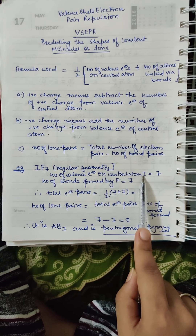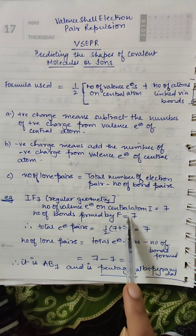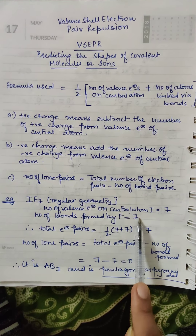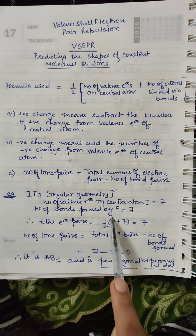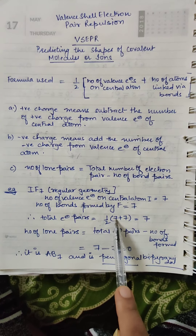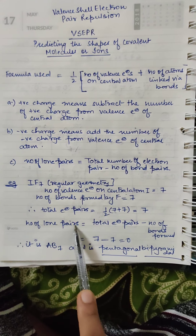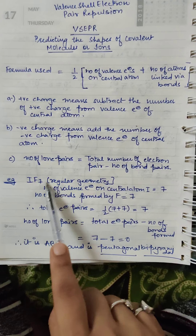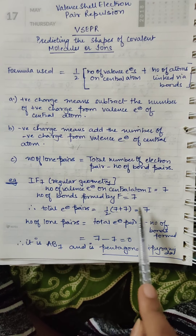Let's try this with an example: IF7. The central atom is iodine, which has 7 valence electrons. In IF7, 7 bonds are formed. So total electron pairs equals half of 7 plus 7, which is half of 14, giving us 7. So the total number of electron pairs is 7.